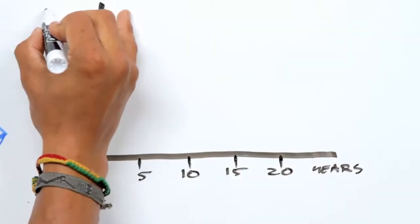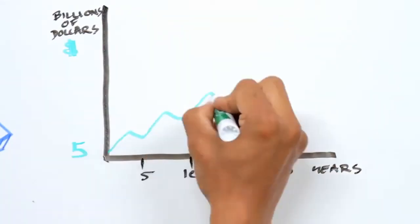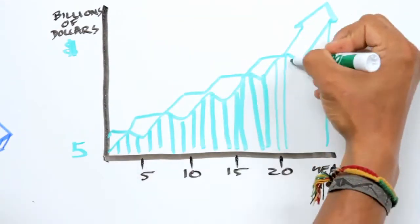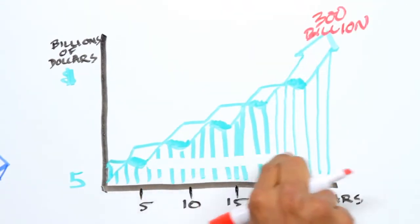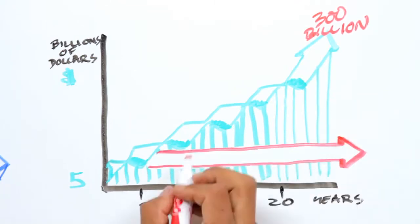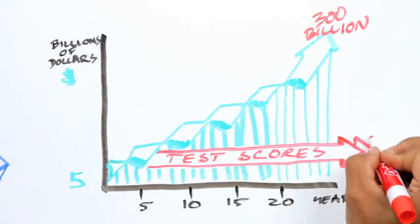Over the past 20 years, the U.S. government's spend on literacy has grown from $5 billion a year to a whopping $300 billion a year. Despite this dramatic increase in spending, national literacy scores have remained flat.